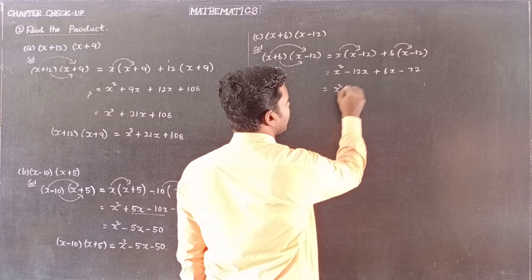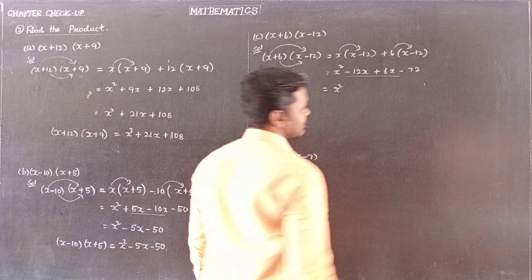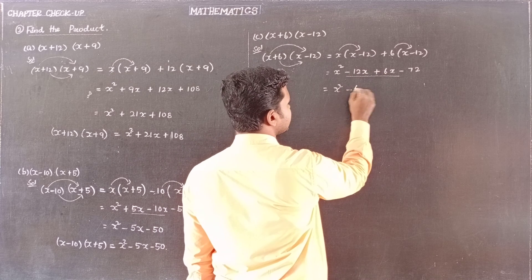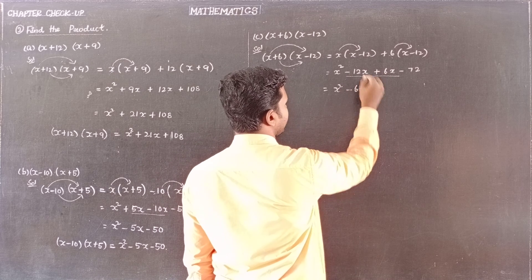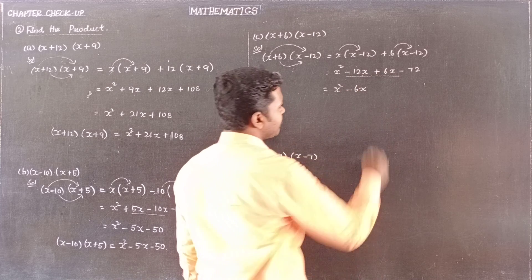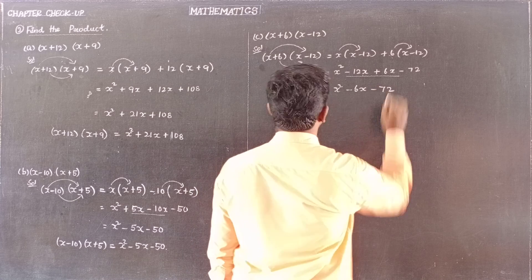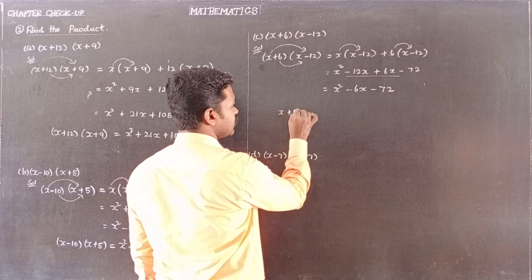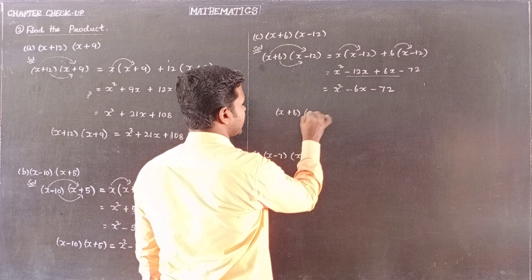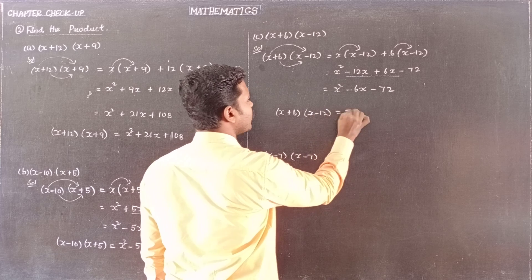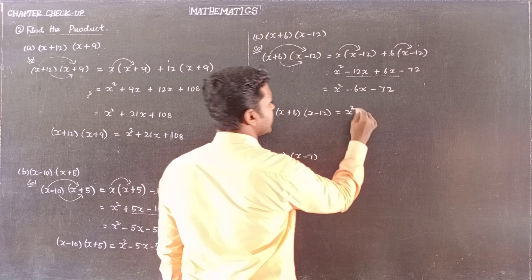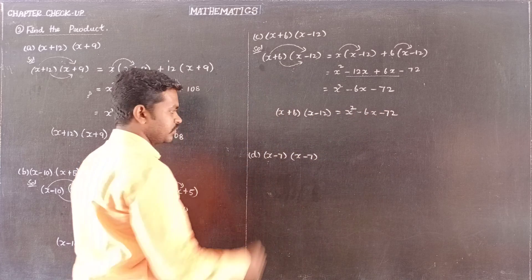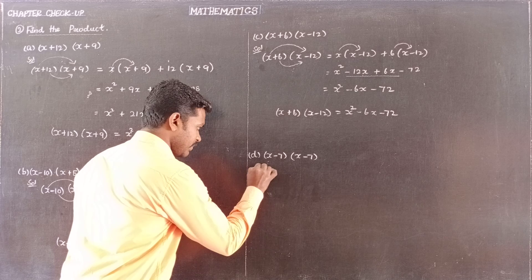Now combining: x squared minus 12x plus 6x — different signs, so subtraction — gives minus 6x, minus 72. Therefore x plus 6 into x minus 12 is equal to x squared minus 6x minus 72.